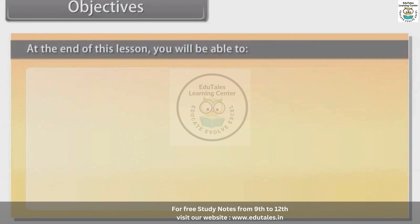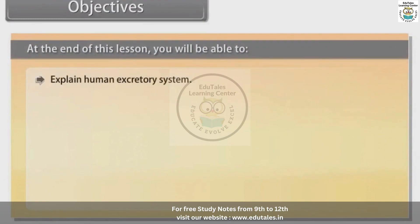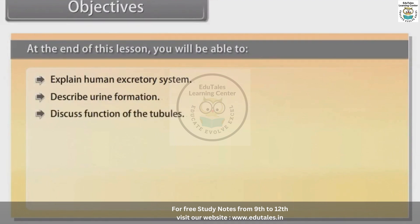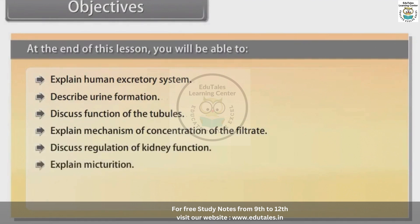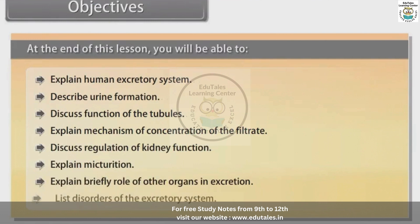Objectives. At the end of this lesson, you will be able to: explain the human excretory system, describe urine formation, discuss functions of the tubules, explain the mechanism of concentration of the filtrate, discuss regulation of kidney function, explain micturition, briefly explain the role of other organs in excretion, and list disorders of the excretory system.